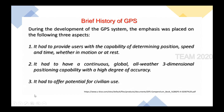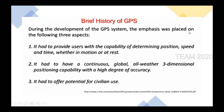During the development of the GPS system, emphasis was placed on three aspects. First, it had to provide users with the capability of determining position, speed, and time whether in motion or at rest. Second, it had to provide continuous global all-weather three-dimensional positioning with a high degree of accuracy — so regardless of weather conditions or the user's position on the Earth's surface, GPS must provide continuous information with higher accuracy. Third, it had to offer potential for civilian use.